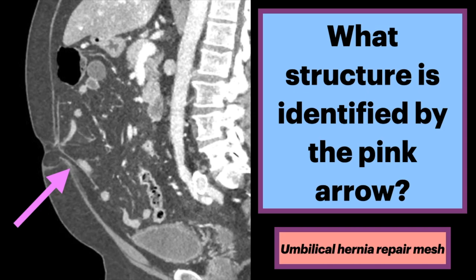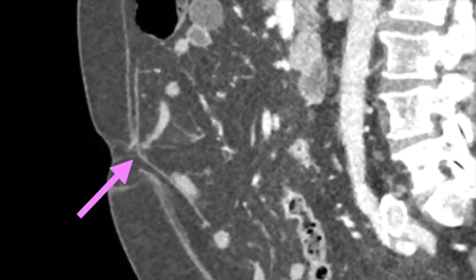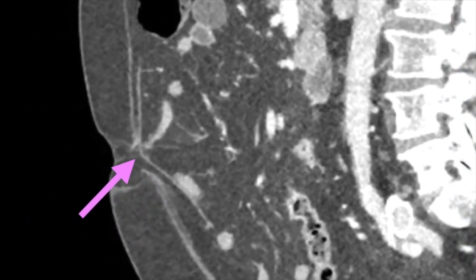What structure is identified by the pink arrow? On this sagittal CT, we see a linear hyperdense structure between the peritoneal fat and an umbilical wall defect.